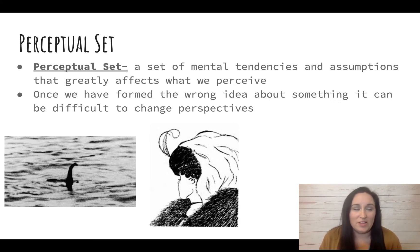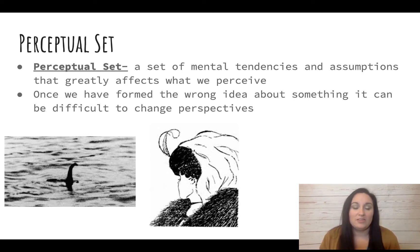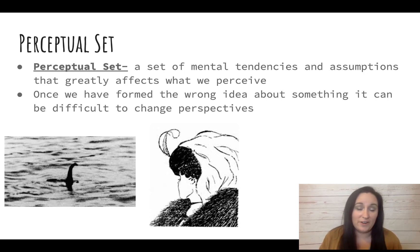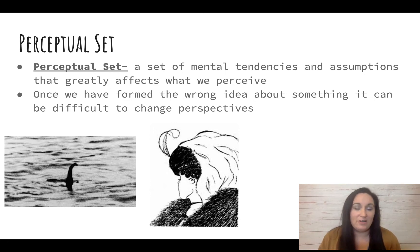Once people have a perspective about something, it's hard to change that perception. For example, this image is called 'old woman young woman,' and depending on how you look at it and what you see first, you will see either an old woman or a young woman — and once you find one of them, it is hard to see the other one.